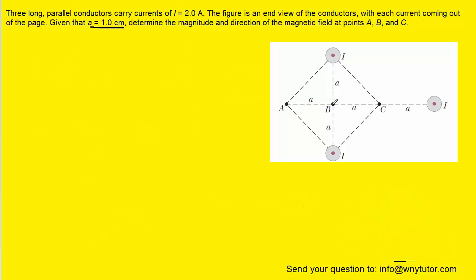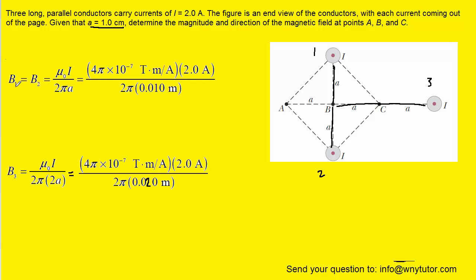Now we'll calculate the magnetic field at point B using the same formula. The distance from wire 1 to point B is A, from wire 2 to point B is also A, and from wire 3 to point B is 2A. Since B1 and B2 have the same distance, their setups are identical. Processing the calculations, we get approximately 40 microtesla for wire 1 and wire 2, and approximately 20 microtesla for wire 3.